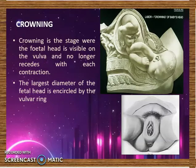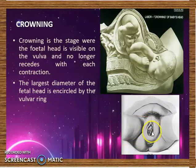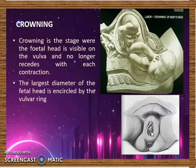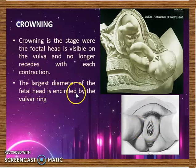Crowning is the stage where the fetal head is visible on the vulva and can no longer retreat back inside during a contraction. As shown in the diagram, the fetal head is visible at the vulva. Crowning usually takes place with the beginning of extension. The largest diameter of the fetal head is encircled by the vulva ring.